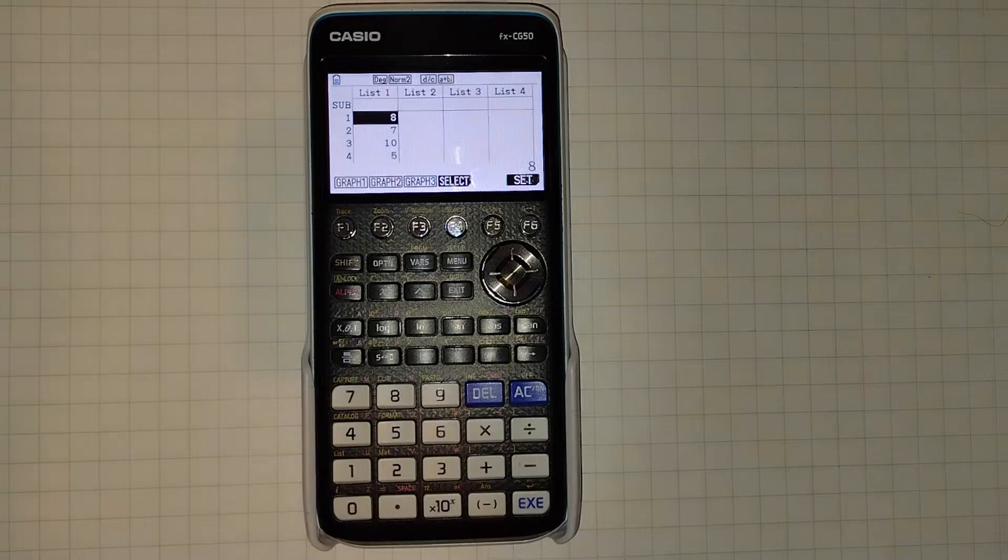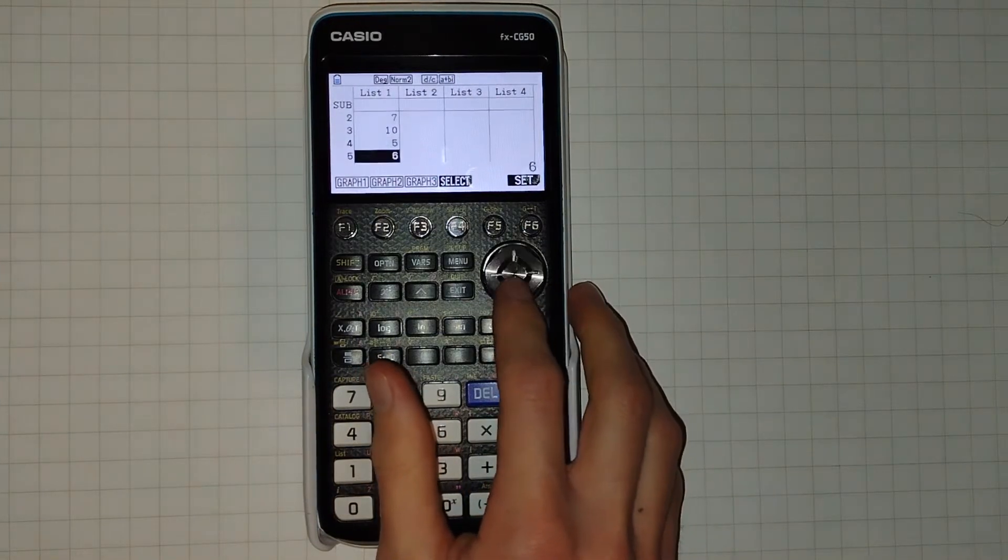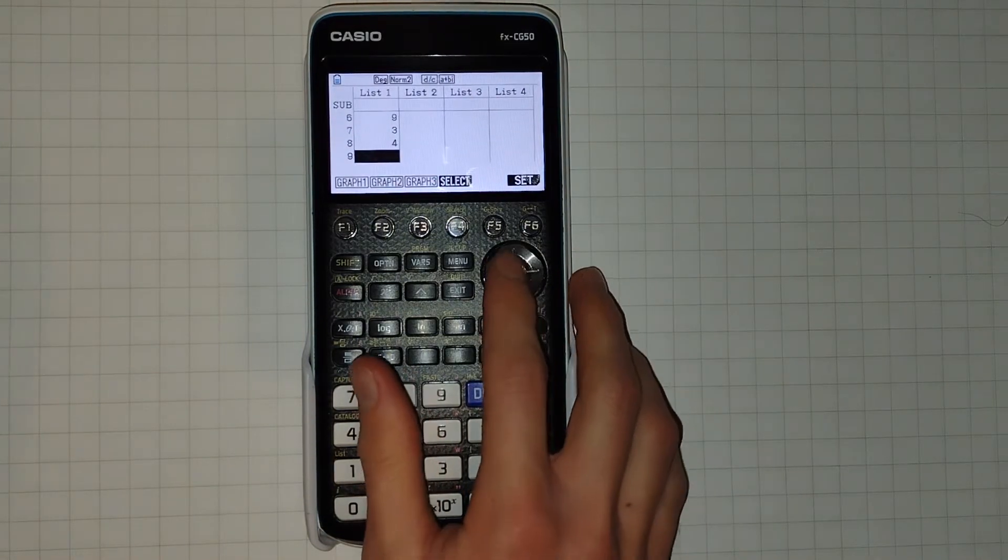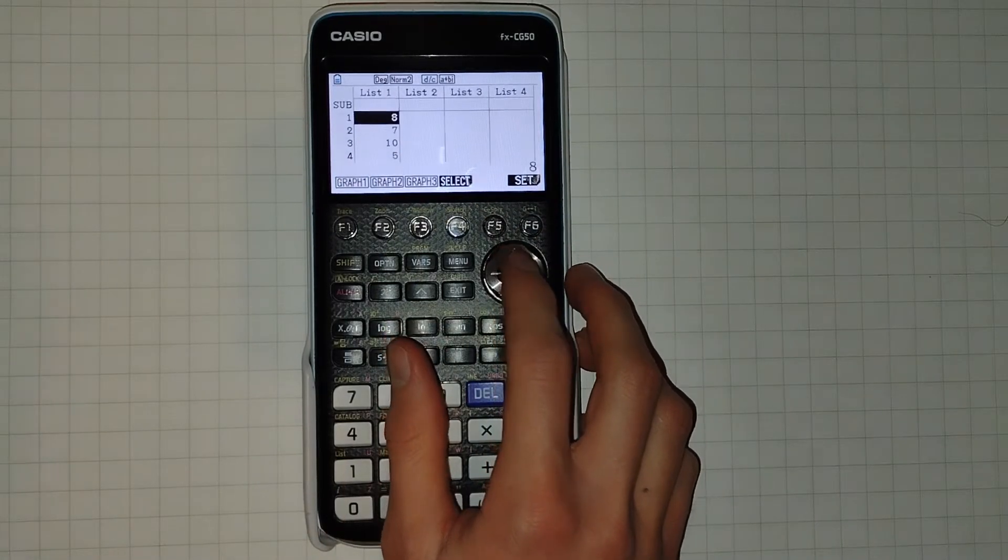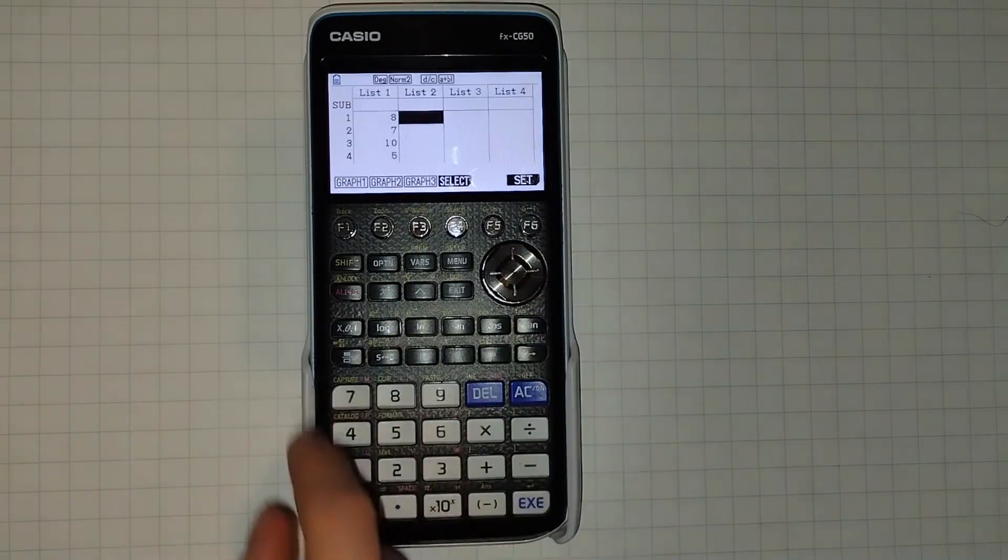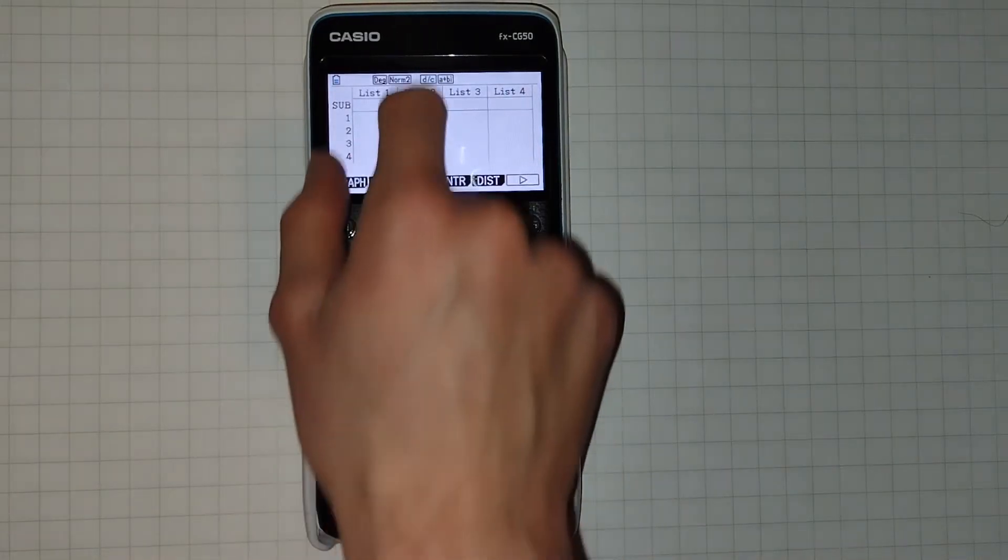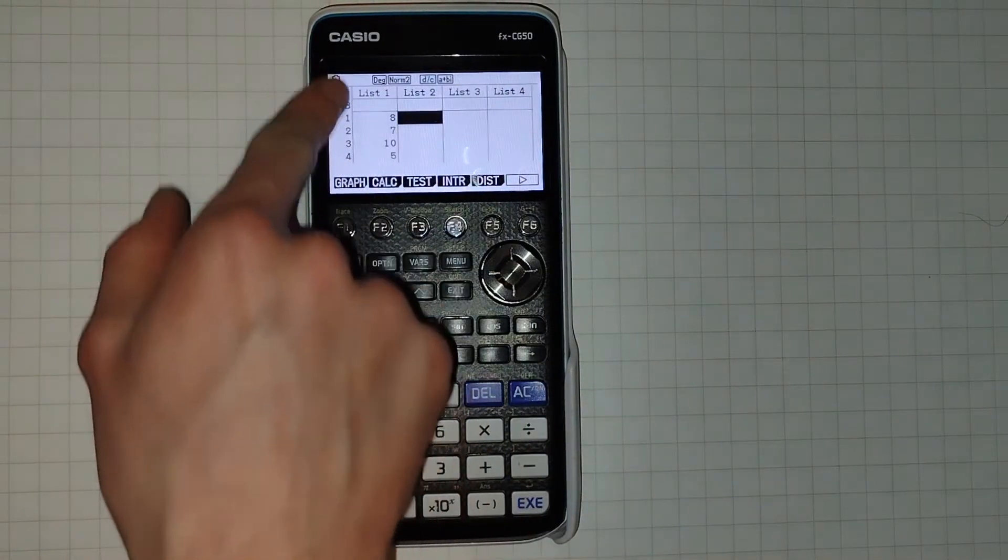Now, what if you've got some frequency table data? It'd be a bit tedious to enter, say, 53's if that's what our grouped data had. To do this, we can use list 2 to enter in the frequency of each of our data values.